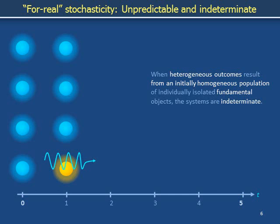When heterogeneous outcomes result from an initially homogeneous population of individually isolated fundamental objects, assuming we are even allowed to consider such ideas, the systems are fundamentally indeterminate. The same, exactly same initial condition generates a variety of outcomes. In such a context, a feature that can be predicted, that can be deterministic, is the proportion of blue icons that will turn into yellow icons.